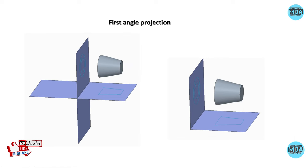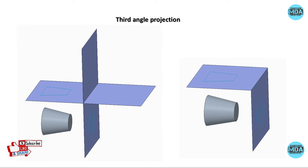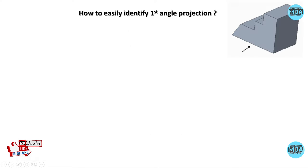Here you can see the projection of a 3D object into a 2D sketch using the third angle method of projection. To easily identify the first angle method of projection — if I am viewing from a particular direction toward the 3D object, I will get the front view. These are the viewable edges that you can see from that viewing direction.